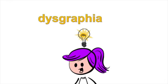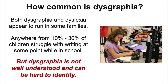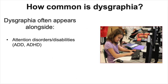In the rest of this video, we'll take a closer look at how common each of these disability areas are and how they're assessed. Let's look at dysgraphia first. Both dysgraphia and dyslexia appear to run in families, although that isn't the only cause or risk factor. Anywhere from 10 to 30% of children struggle with writing at some point in school. Dysgraphia is not well understood yet, not nearly as well as dyslexia, and it can be hard to isolate and identify. One reason is that even though it can show up on its own, it's much more often seen with one or more other disabilities or difficulties.